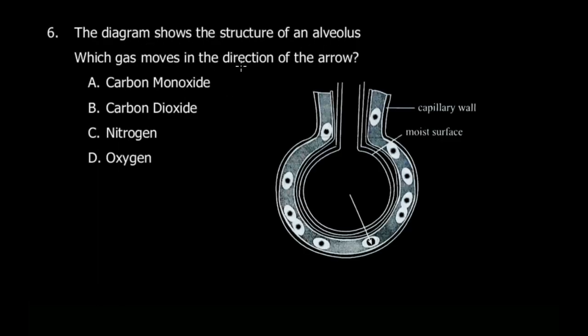Next question: the diagram shows the structure of an alveolus. Which gas moves in the direction of the arrow? The arrow shows air coming from inside the alveolus into the bloodstream. The air coming in would be oxygen, not carbon dioxide, carbon monoxide, or nitrogen. Air coming out from the body into the alveolus would be carbon dioxide, but coming in is oxygen.